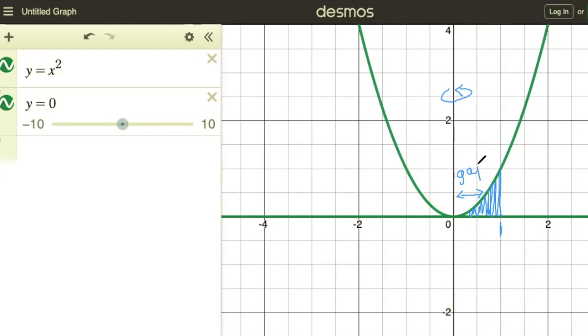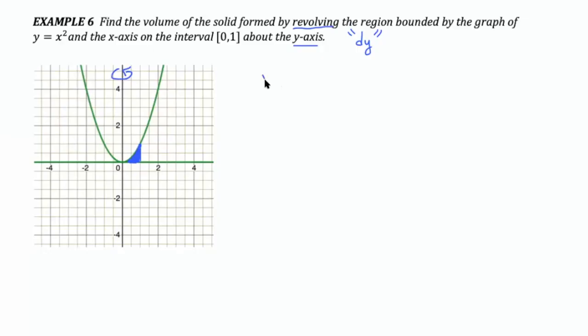And if we're going to have a gap, we're going to use washers to integrate. Our volume formula needs to be the one for washers. So we're going to be integrating pi capital R squared minus little r squared dy because it's a vertical axis of revolution.